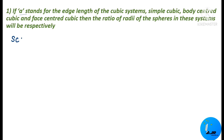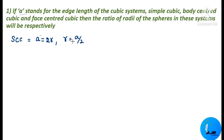For a simple cubic system, the edge length is related to the radius as A = 2R, where A represents the edge length and R represents the radius. When you want the radius value, this equation becomes R = A/2. Next comes BCC, that is body centered cubic system. The edge length is related to R as A√3 = 4R. So when you need R, it is R = (√3/4) × A.